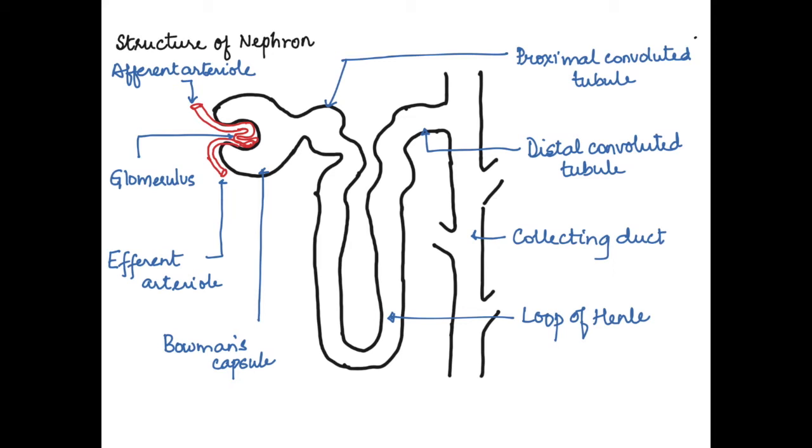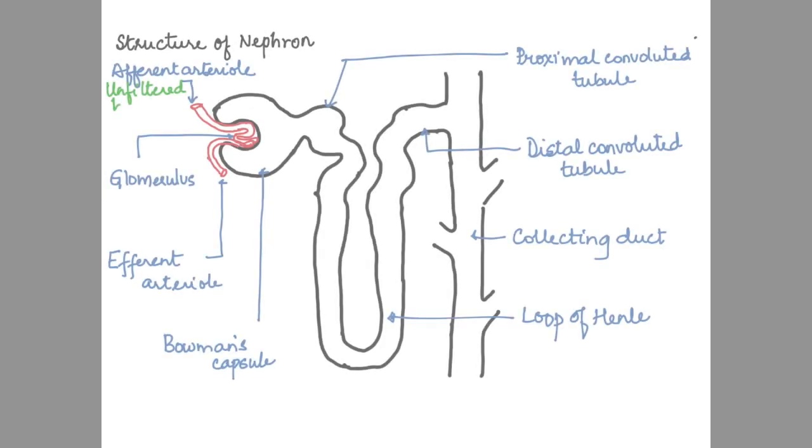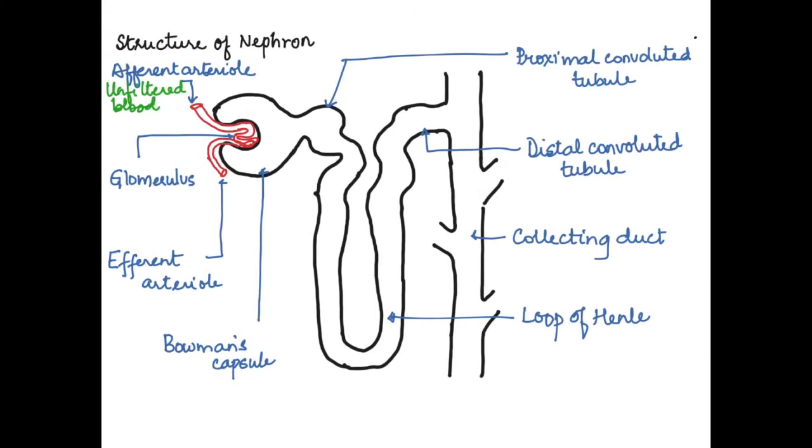Once we have completed this, let's start annotating the diagram. We begin with the annotations. The afferent arteriole is the one which carries unfiltered blood to the nephron. This then goes into the glomerulus, and the glomerulus delivers it into the Bowman's capsule.